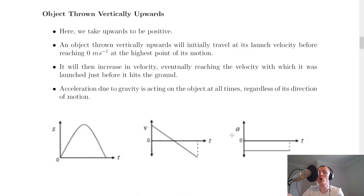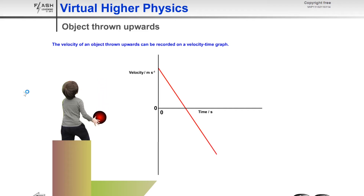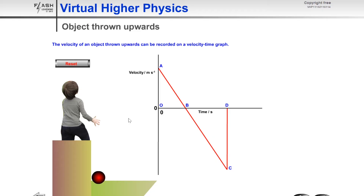Next we look at a common example: an object thrown vertically upwards. We're going to use a sign convention and define upwards as positive, since the object is moving upwards to begin with. To help visualize what's going on, we'll look at an animation of an object being thrown vertically upwards. We're defining upwards as positive because the ball is moving upwards to begin with, just as stated.